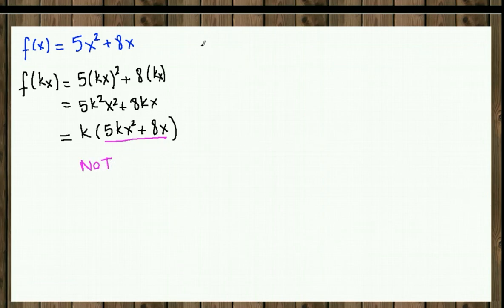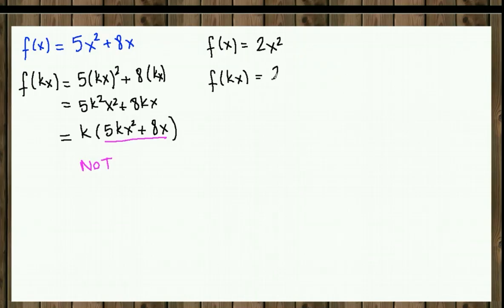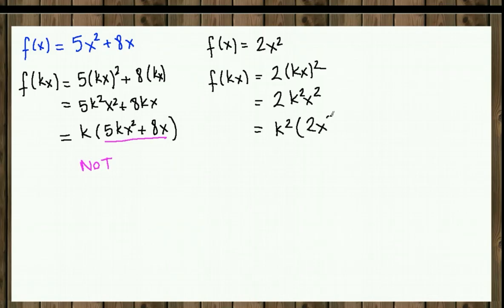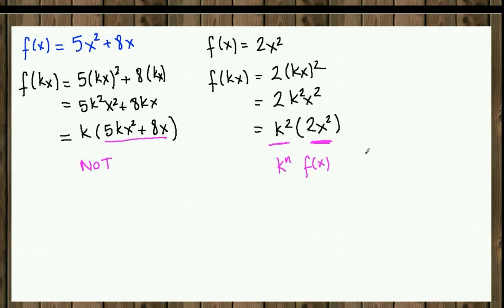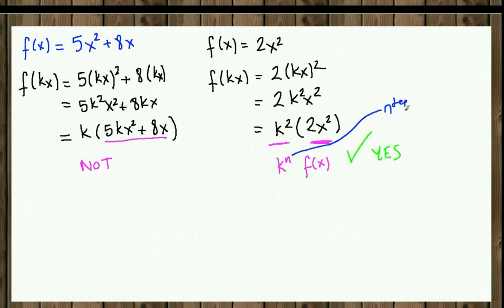Let's see another example. Given f(x) equals 2x squared, we substitute x with kx to get 2(kx) squared, which equals k squared times 2x squared. We factor out k squared and what remains inside is the original function 2x squared. We have k to the power n times the original function, so this is homogeneous. Here n is the degree of homogeneity — we call it n-degree homogeneous. In this specific example, it is second degree homogeneous.